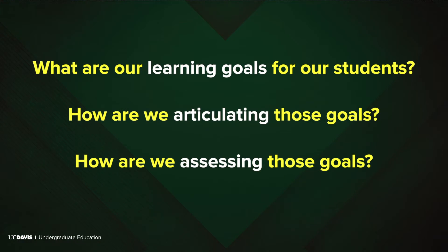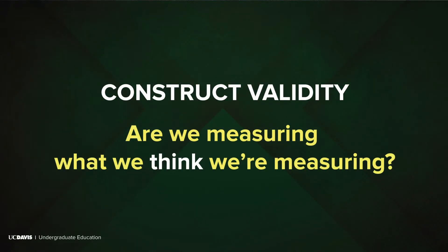So we talk about all the various student learning outcomes along the way. What are our learning goals for our students? How are we articulating those goals? And most importantly, for questions like are they going to graduate or not, how are we assessing those goals? For me, when I think about the relationship between learning goals, outcome assessment, and equity, the very first thing that comes to my mind is my favorite concept from grad school classes on assessment: construct validity.